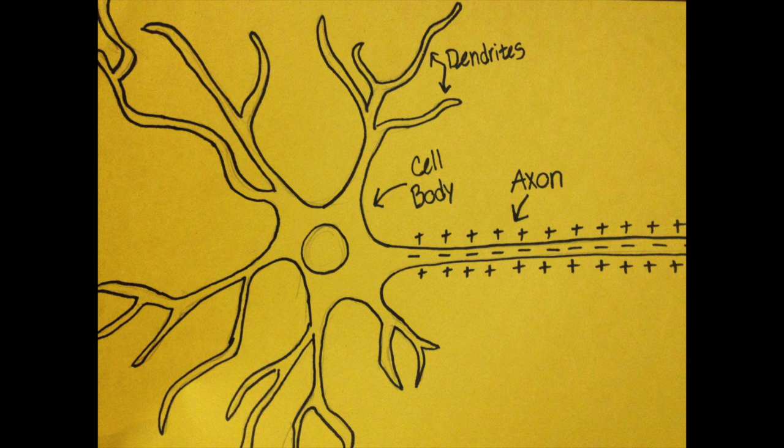Action potential is the sending of an electronic signal through an axon of a neuron, which is an excitable cell, in order to send a message from the brain to another part of the body. Everything we do is from action potentials being fired throughout our body, triggering a response.